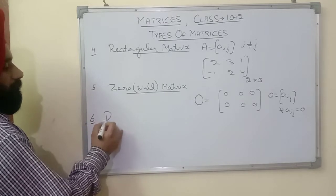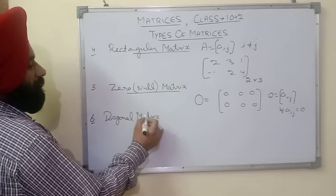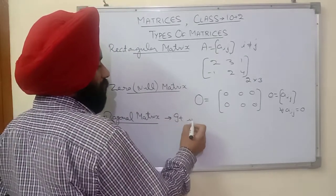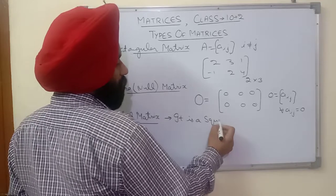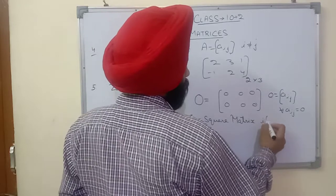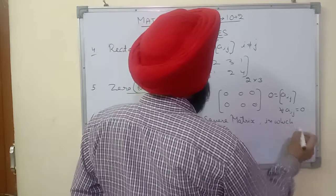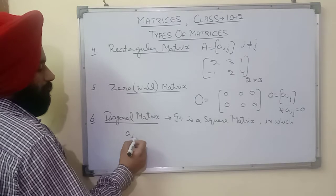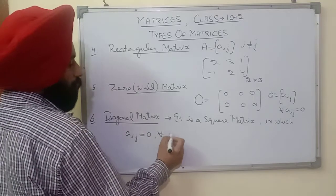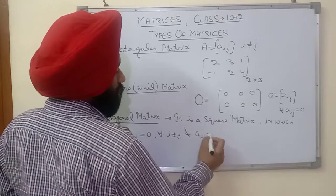Next is the diagonal matrix. A diagonal matrix is a type of square matrix in which a_ij = 0 for all i not equal to j, and a_ij is non-zero for all i equal to j. In other words, all non-diagonal elements are zero, while diagonal elements can be non-zero.